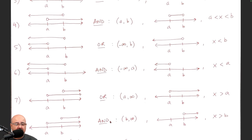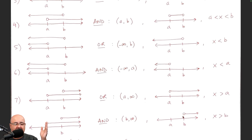Same exact picture, but if it were an AND problem, you would say now I'm looking for where the overlap is — where is the sandwich? Here the two lines don't even exist, so it couldn't be there. Between A and B, the top line doesn't exist, so it couldn't be there either. But after B, to the right of B, both lines are on top of each other. So the solutions live everywhere to the right of B — that's the final answer. The interval there is B comma infinity, because the solutions start at B and go all the way to infinity. As an inequality, you would write X is greater than B — all the solutions are numbers greater than this number B.